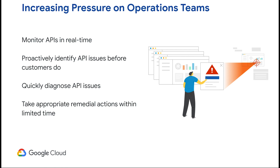You also need to be very careful in terms of configuring your alerts. Too much alerting is a problem, and at the same time, no alerting is also a problem. And finally, you have to have everything in place before your customers are impacted, and also make sure you meet the SLAs that you promised to your customers. That's where Apigee's API monitoring comes into the picture.